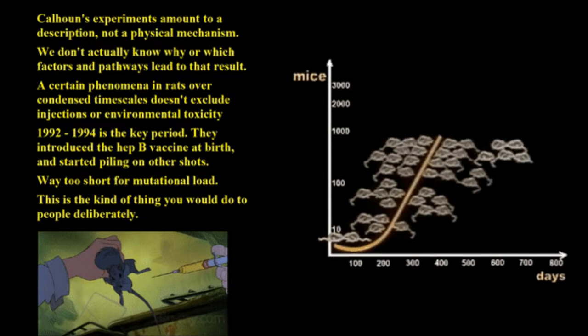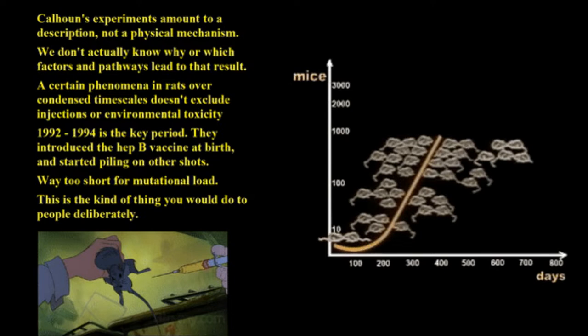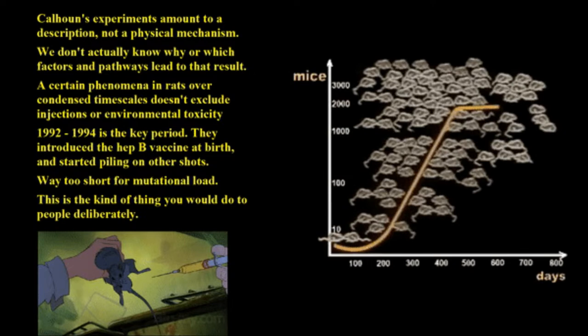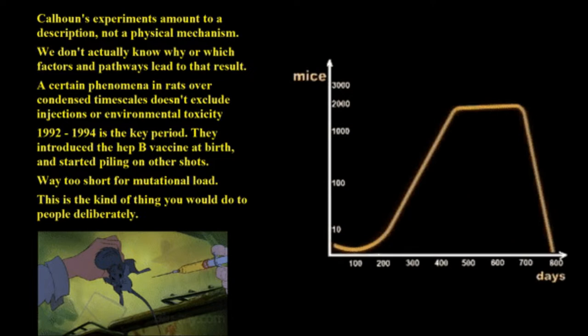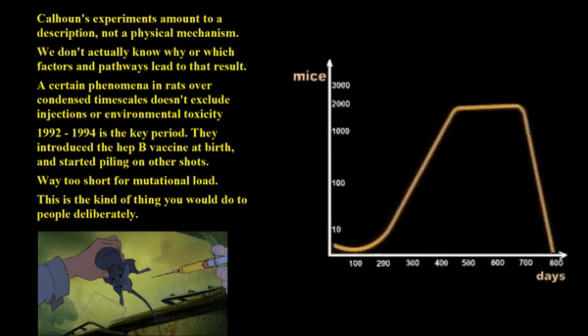He did 25 experiments, called them utopian universes. Number 25, the classical one, he allowed the mice to multiply. He started with four couples and they were normal couples — building their nests normally, having kids. They were in paradise, and after a few months they multiplied all the way to 2000 mice.